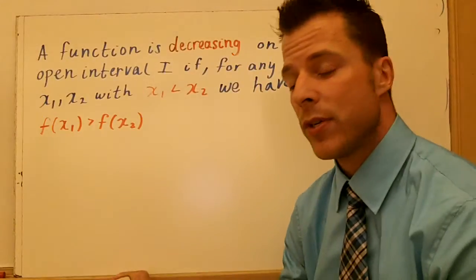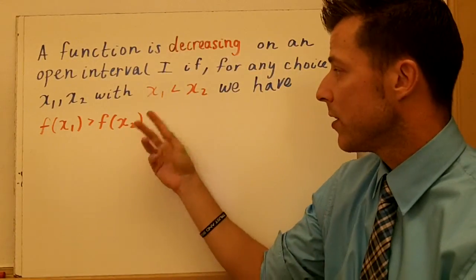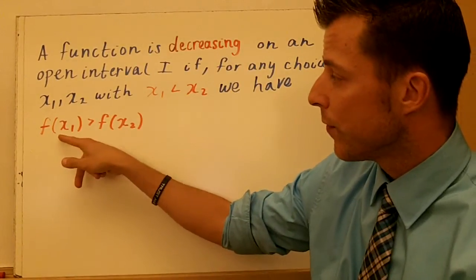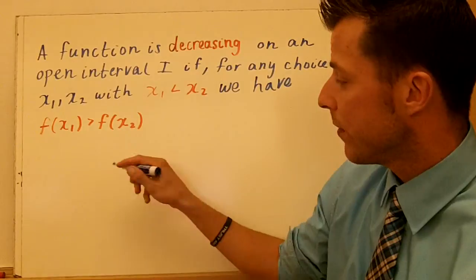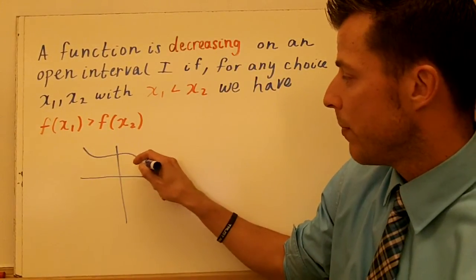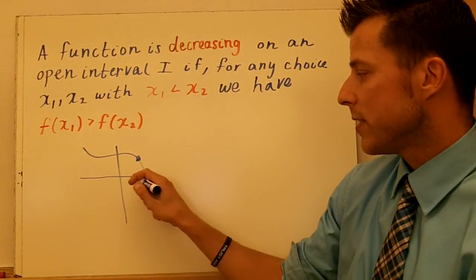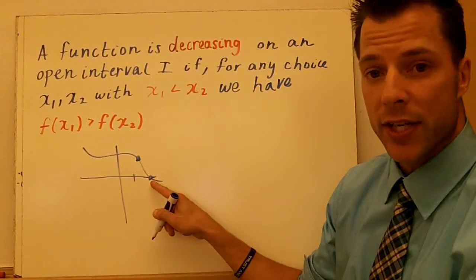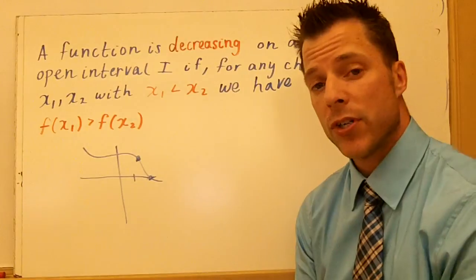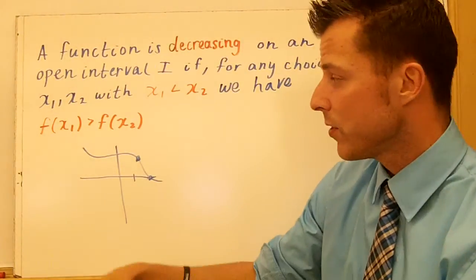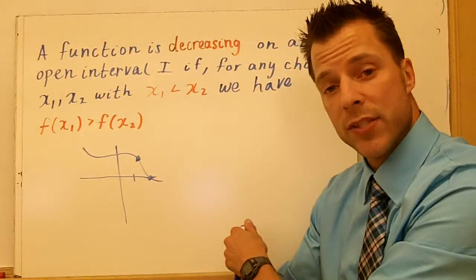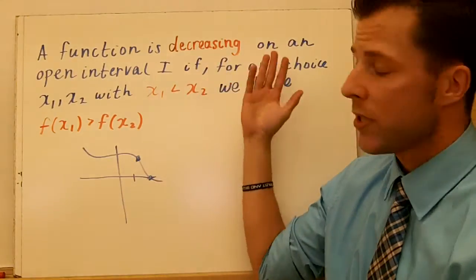The same idea goes for decreasing functions, except the big thing here is if your x1 is less than x2, your first output value is going to be larger than your second value. So if you think of a function going down and we pick a point here and a point here, we can see that x1 is smaller than x2, but the output of x1 is larger than the output of x2. That's how you know the function's decreasing — looking left to right, the function should be going down, the y value getting smaller as your x values get larger.